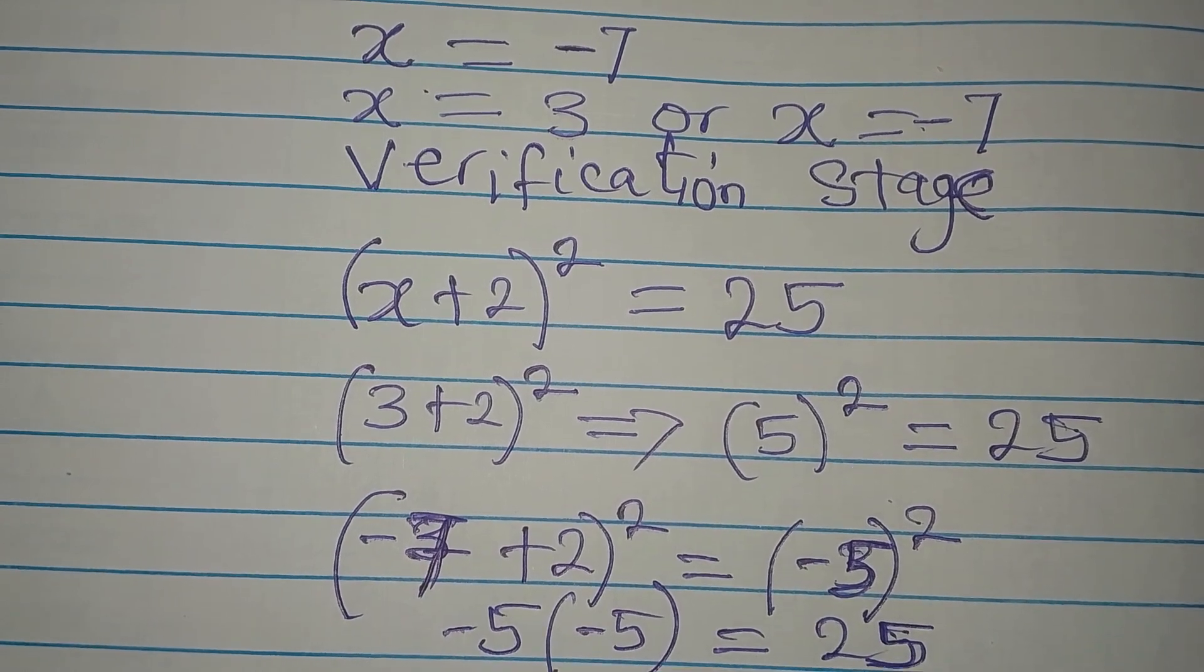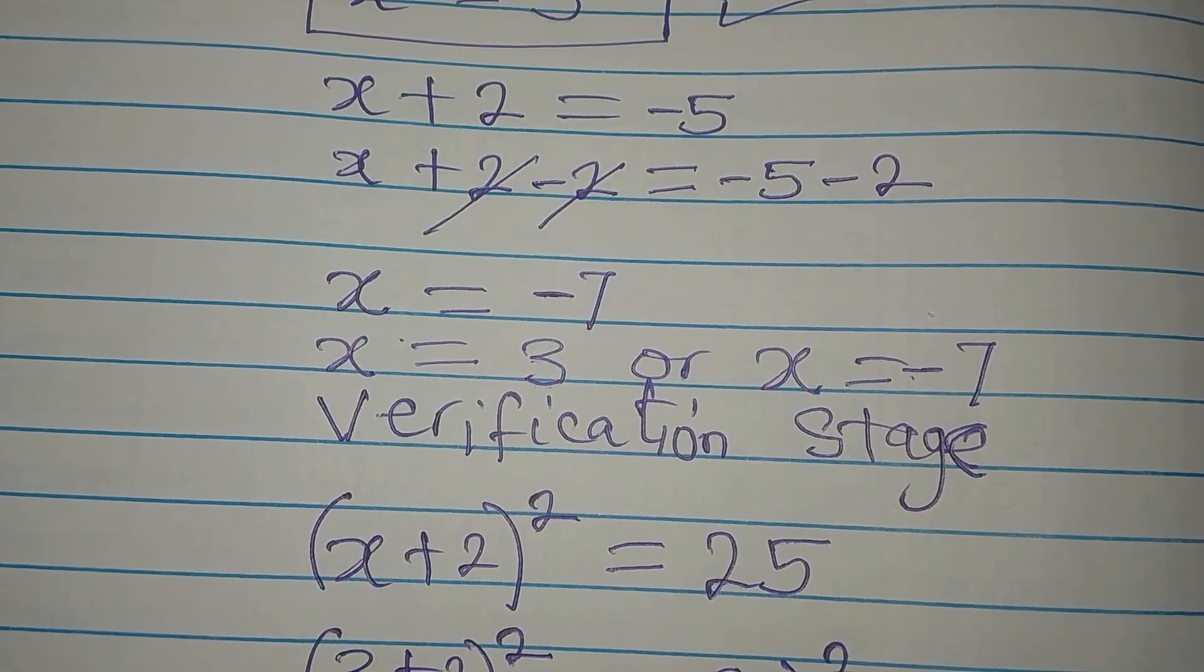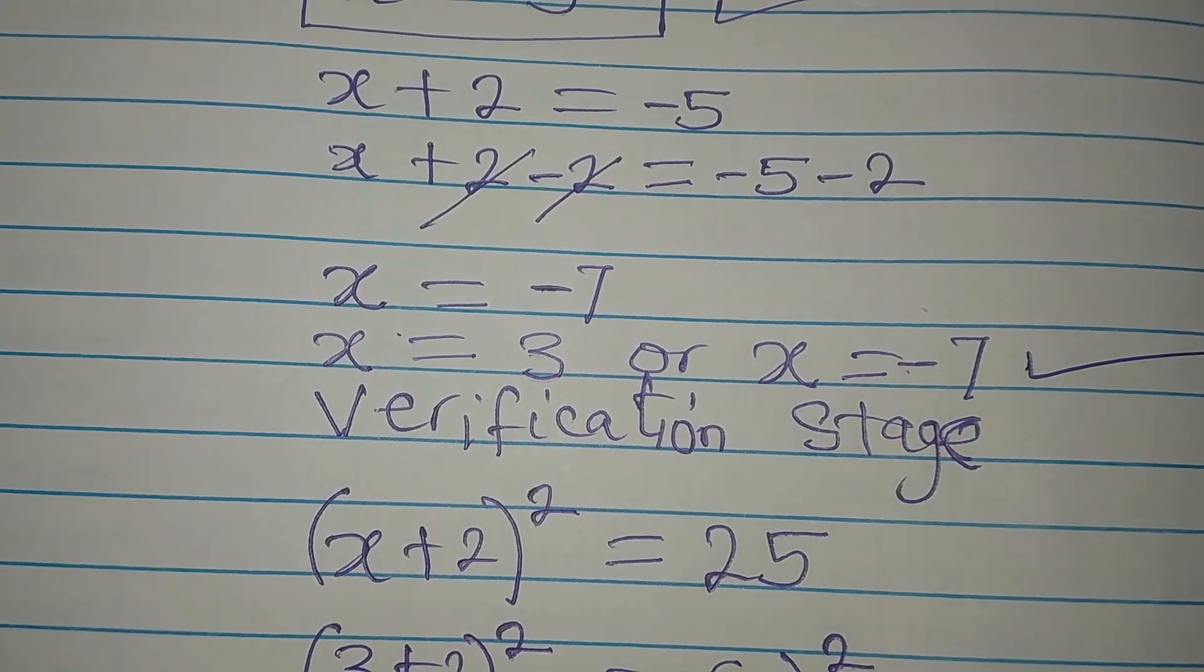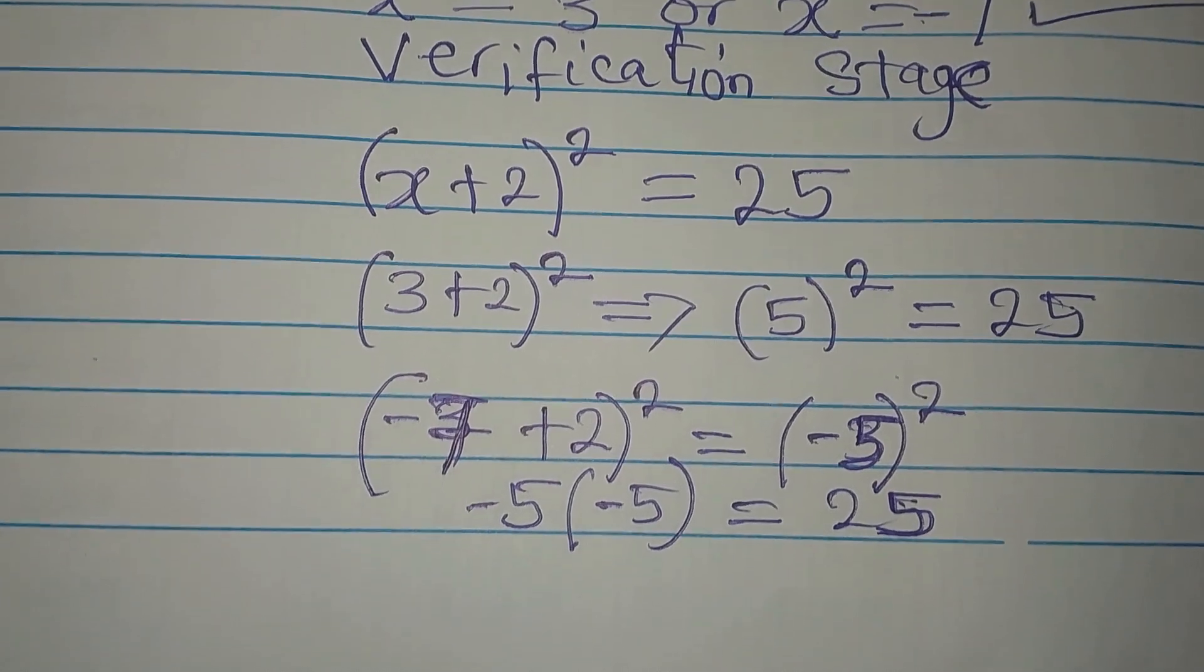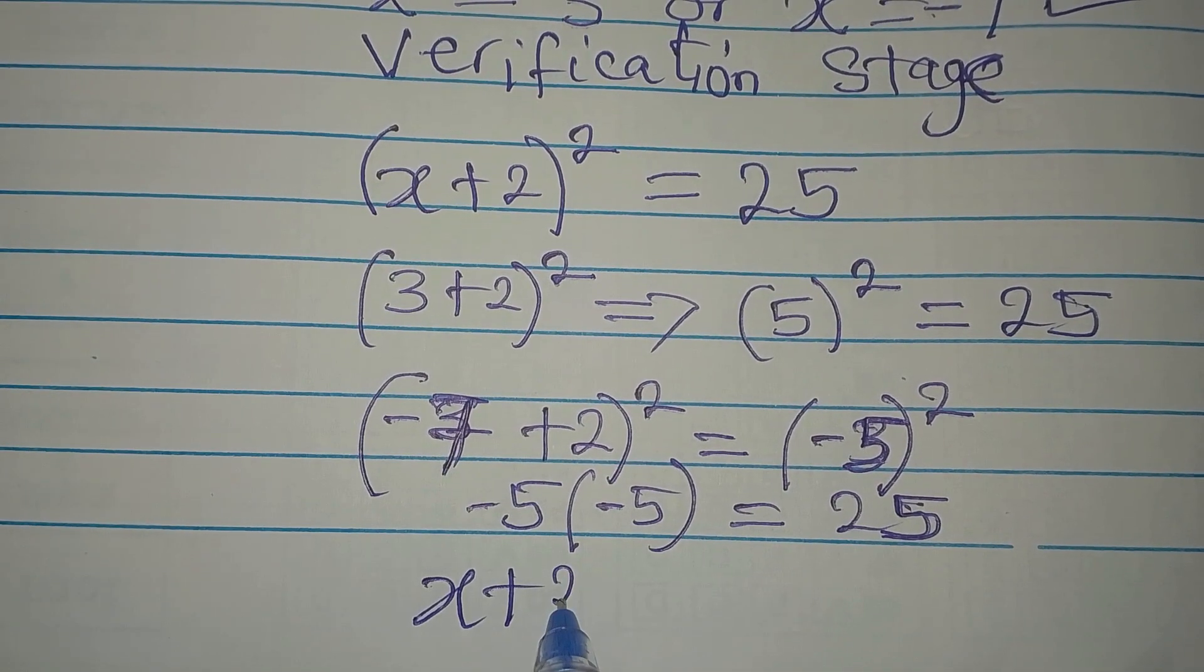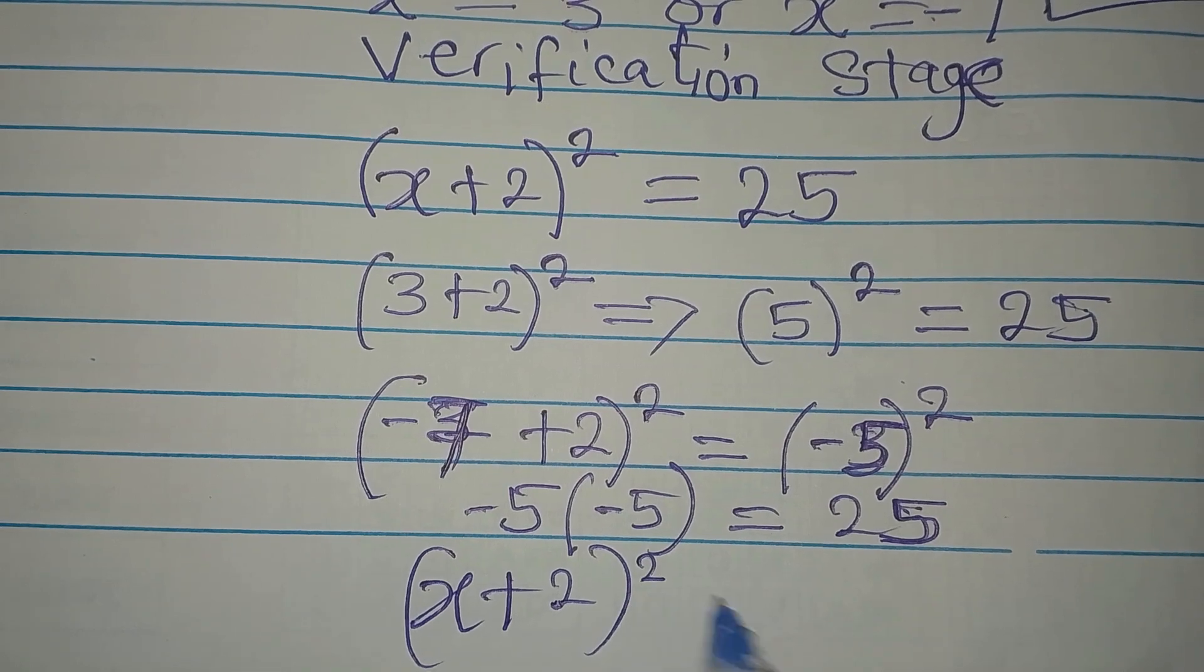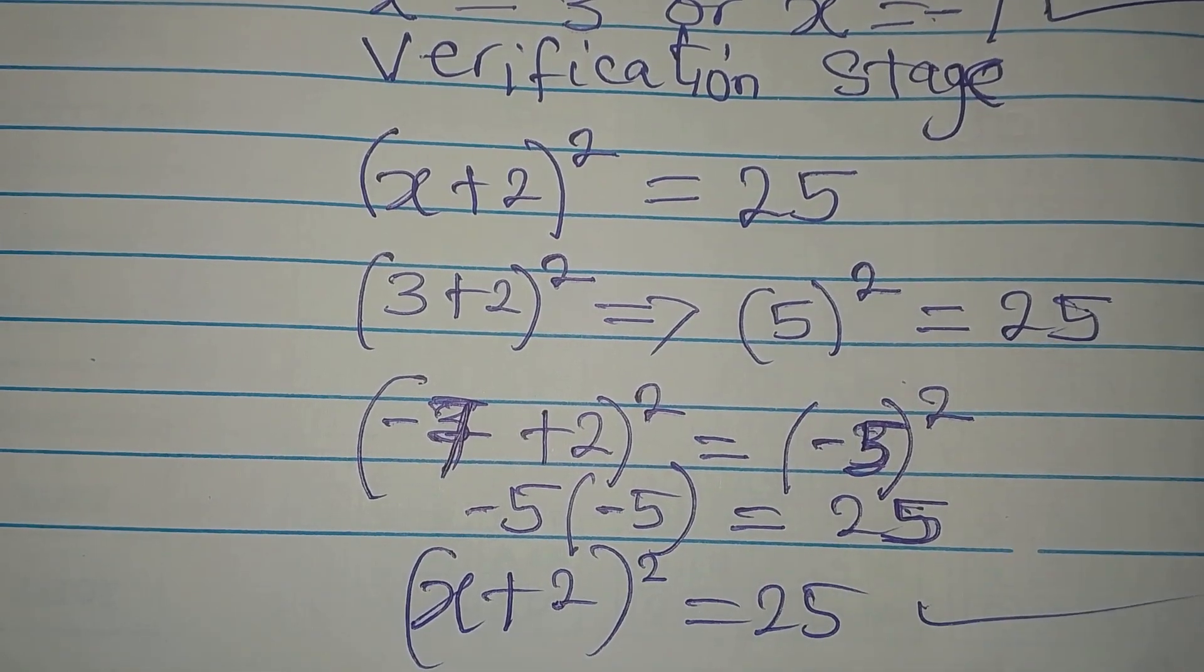Okay, so this equally means that the second value which is x equals negative 7 satisfies the equation. And the equation still remains x plus 2 to the power of 2 equals 25. Thank you for watching.